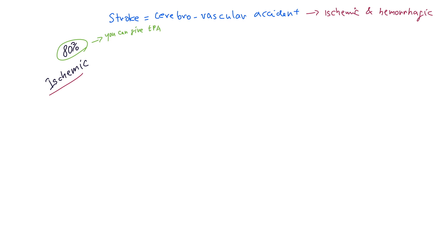So we'll name this ischemic stroke, and hemorrhagic will come later. But first, one very important comment: how does CT handle ischemic stroke? How long does it take to see an ischemic stroke on CT, and how will it look? It's going to be darker — it gets darker on CT.